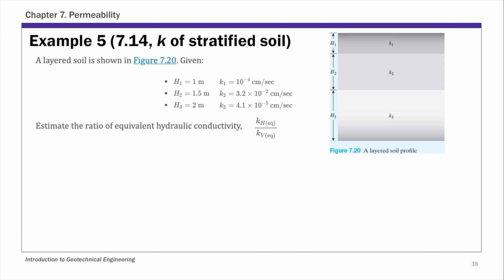So we have a layered soil with three layers and we are given the height and permeability or hydraulic conductivity of these three layers. We need to estimate the ratio of equivalent hydraulic conductivity, which is kh, the equivalent horizontal hydraulic conductivity, over the vertical equivalent hydraulic conductivity.